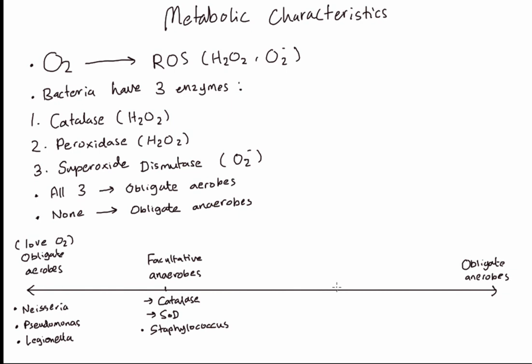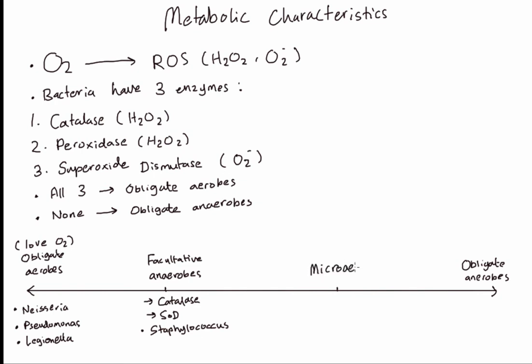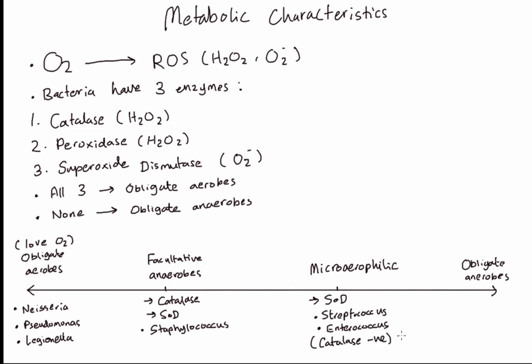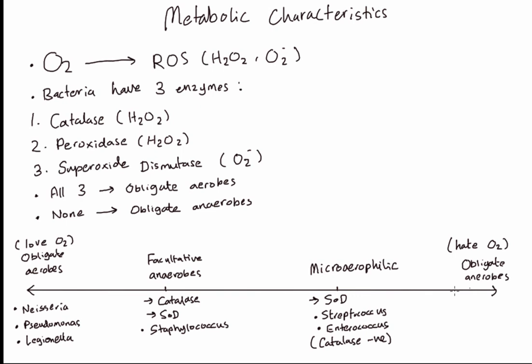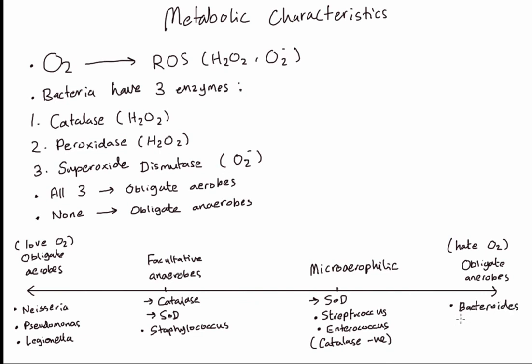Next are bacteria that only have one enzyme, superoxide dismutase. These are called microaerophilic. And since they don't have catalase, we can call them catalase negative. Examples are Streptococcus and Enterococcus. Now you know that Streptococcus is catalase negative and Staphylococcus is catalase positive. And lastly are the bacteria that don't have any of these three enzymes, the obligate anaerobes. Examples are gut bacteria such as Bacteroides and Clostridium.